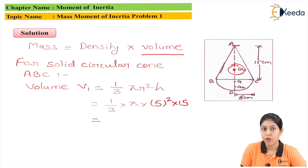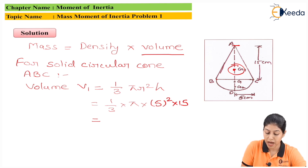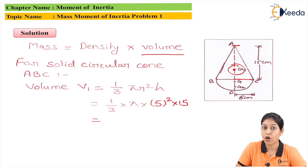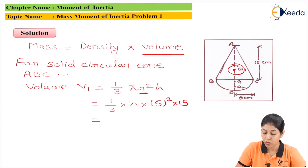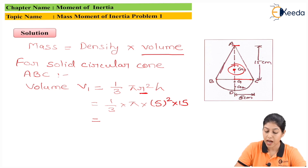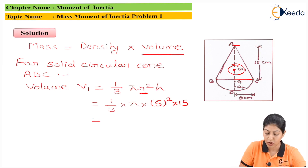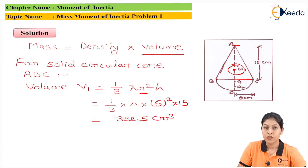Applying the cone volume formula: V1 = (1/3) π r² h = (1/3) × π × 5² × 15. Solving this, we get V1 = 392.5 cubic centimeters, since all dimensions are in centimeters.